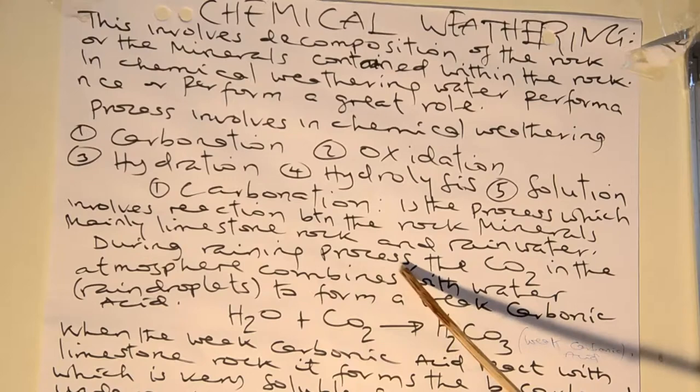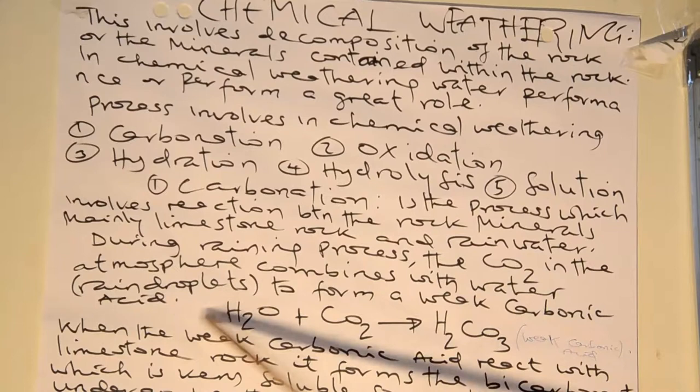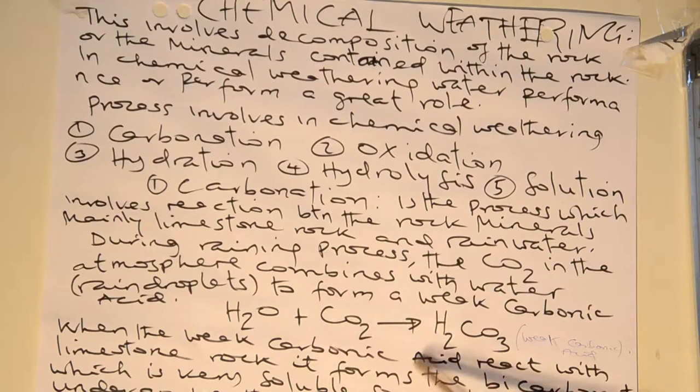Carbonation is a process which involves the reaction between rock minerals — mainly limestone — and rainwater. During rain, carbon dioxide in the atmosphere combines with water or rain droplets to form a weak carbonic acid, which can form weak carbonic acid. When this weak carbonic acid reacts with limestone rock, it forms bicarbonate, which is very soluble, so anytime it can undergo weathering through solution.